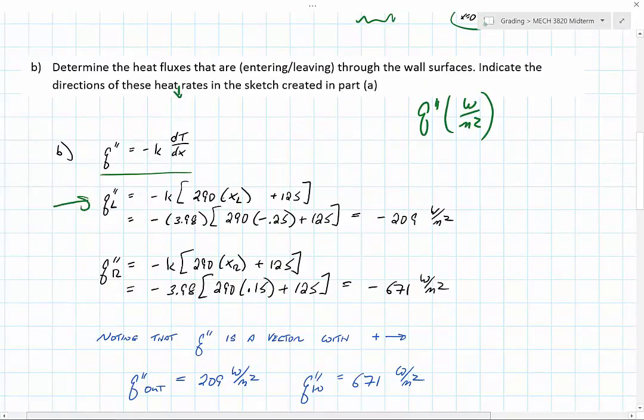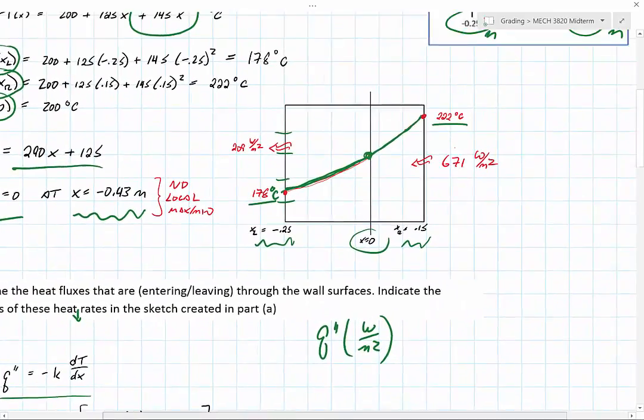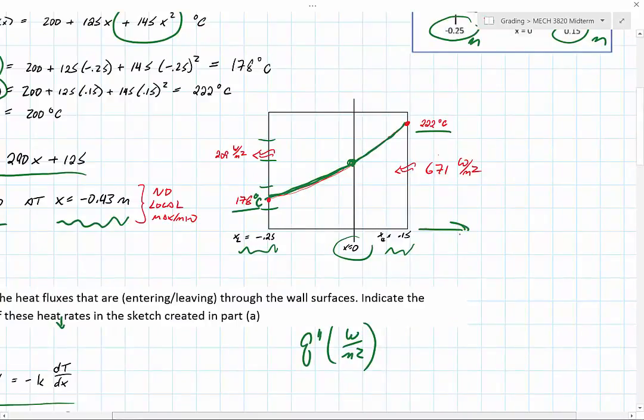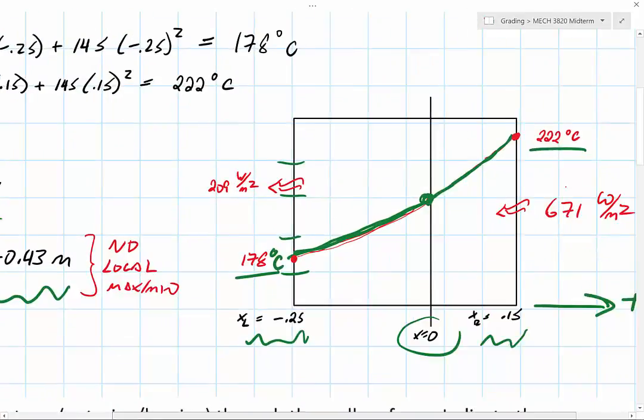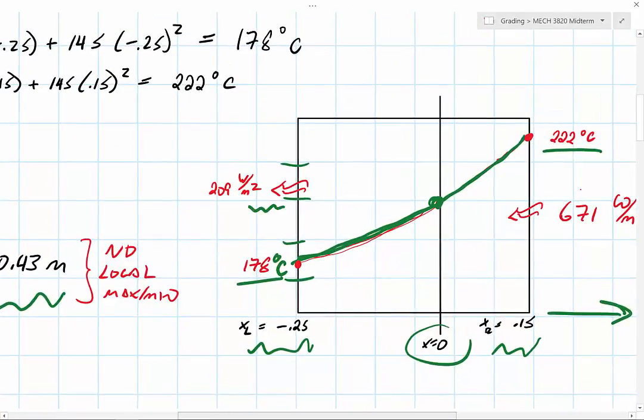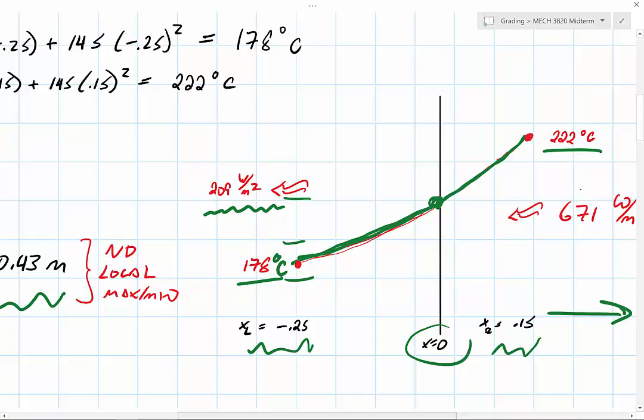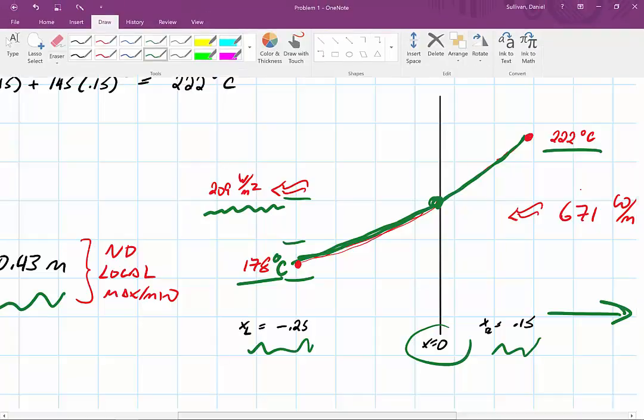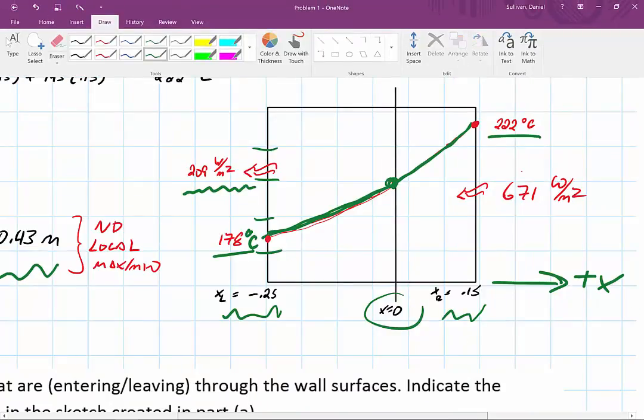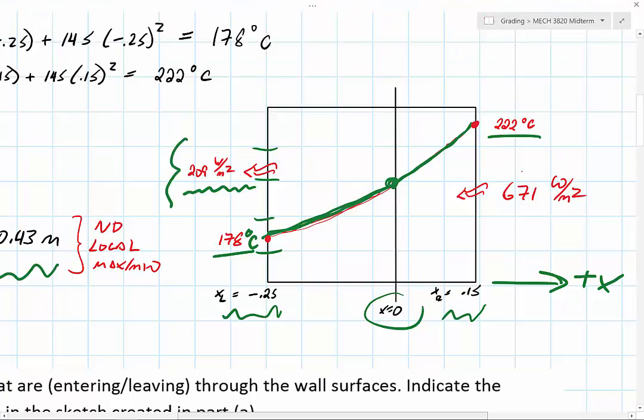We do that for the left hand wall and plug in negative 0.25, and I get that my heat flux is negative 209 watts per meter squared. If I look up here, here is positive x, so if I have a negative heat flux at this location it is pointing in the negative x direction. What we find out is that this is q flux out, so there's an outward flow of heat through the left hand wall.